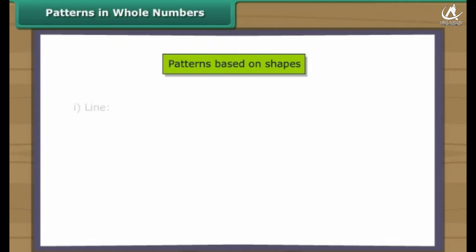Numbers can be arranged in some elementary shapes using dots. The shape could be a line, square, rectangle, or triangle. Every number can be arranged as a line, for example.